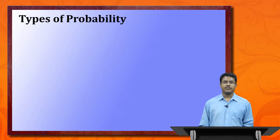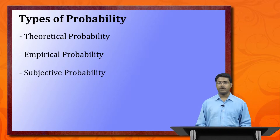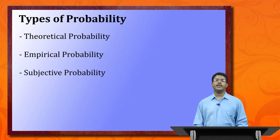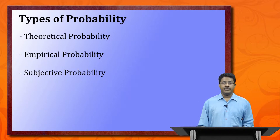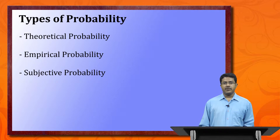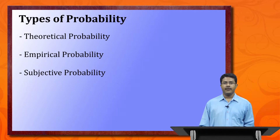Types of probability: we divide probability into three categories. First is theoretical probability, then empirical probability, and subjective probability. Theoretical probability means we have a value in our mind — for example, if we toss a coin, there is a 50% chance of getting heads. That is theoretical probability.